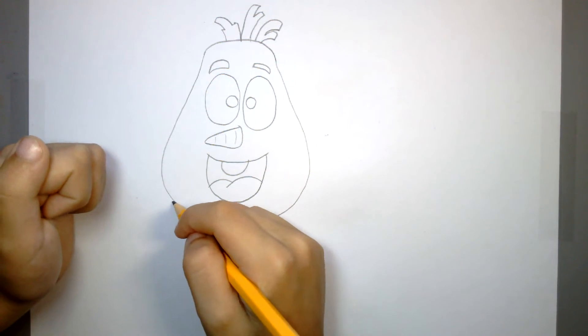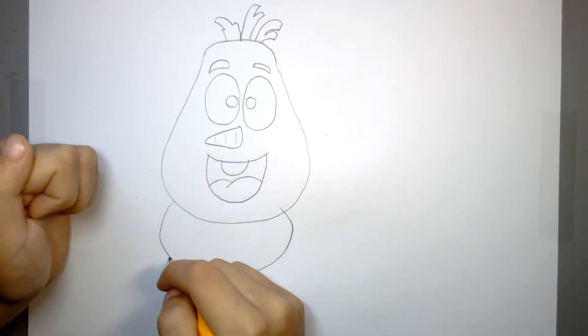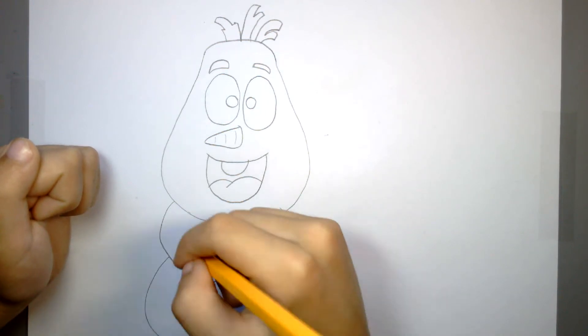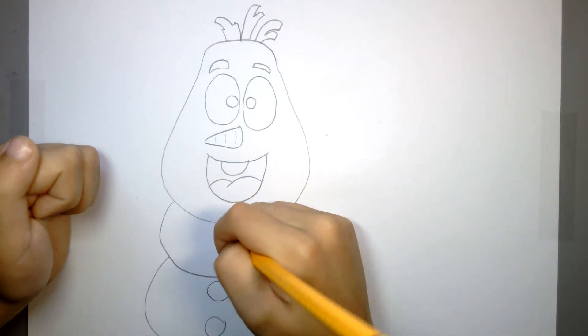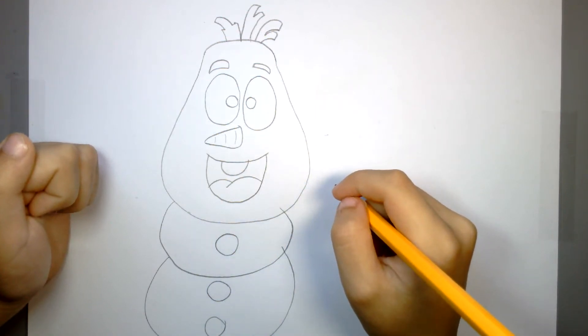And now we're going to do the body. The other body. Two circles. There's a circle.